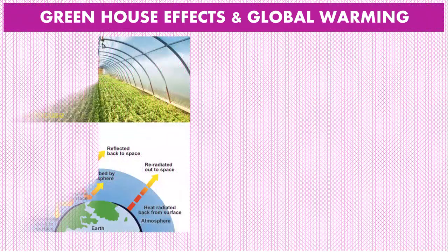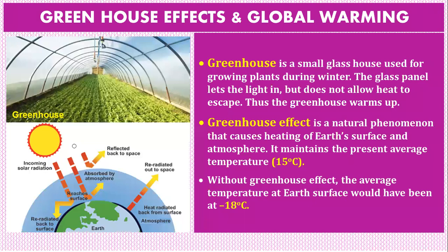Moving ahead with greenhouse and global warming: a greenhouse is a small glass house used for growing plants during winter. The glass panel lets light in but does not allow heat to escape, thus warming up the greenhouse. Similarly, the greenhouse effect is a natural phenomenon that causes heating of Earth's surface and atmosphere.